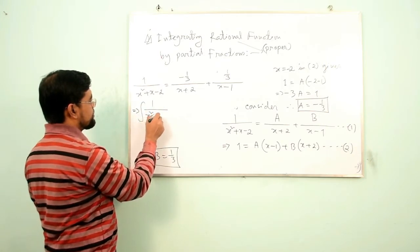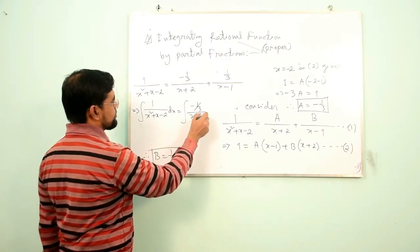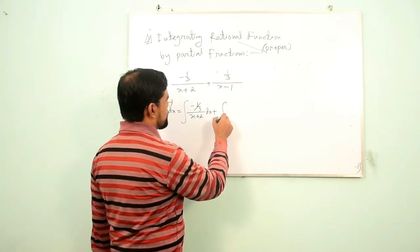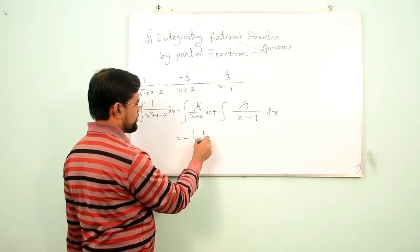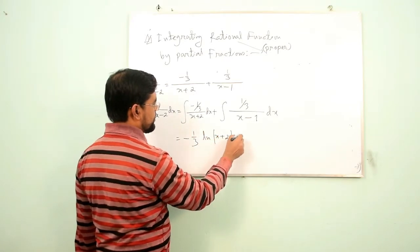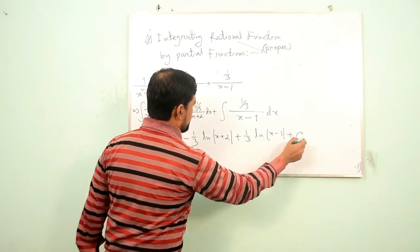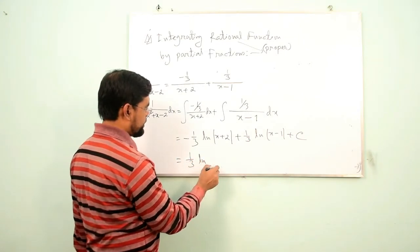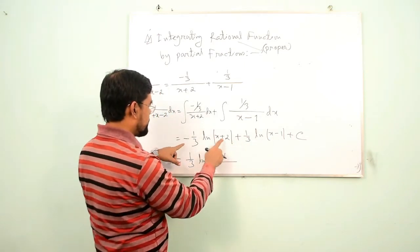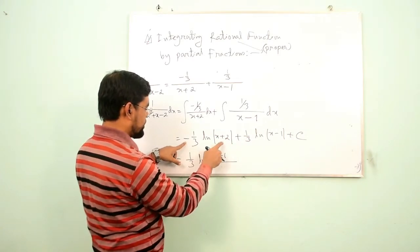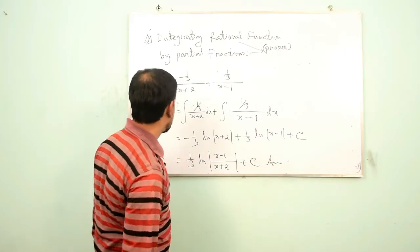Integrating both sides with respect to x, we get: (−1/3)ln|x + 2| + (1/3)ln|x − 1| + C, which can also be written as (1/3)ln|x − 1| − ln|x + 2| + C, placing the negative term in the denominator. This is the result.